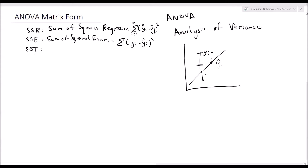Lastly, we have SST, the total sum of squares, equal to the summation of yᵢ minus ȳ, squared. I've quoted things here in scalar form — the usual way regression models are first presented. But we're now interested in looking at the matrix form.